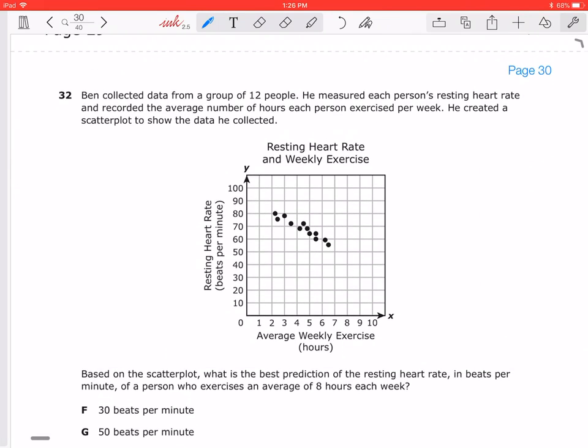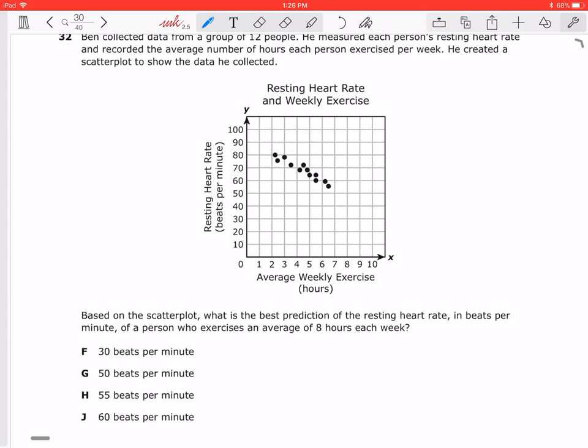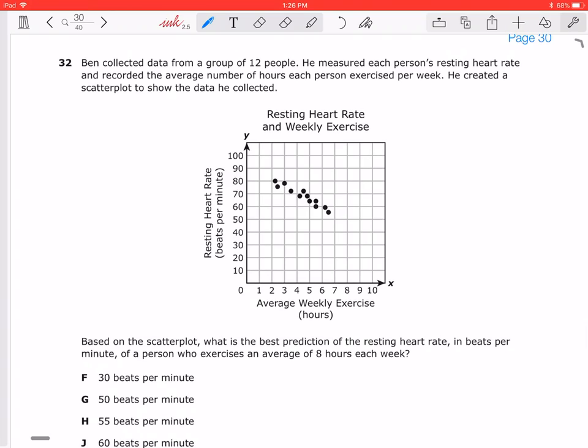Let's see. 32. So Ben is collecting data from a group of 12 people. He measured each person's resting heart rate and recorded the average number of hours each person exercised each week. Created a scatter plot. So a scatter plot is just a number of data that we can talk about that depending on how closely related that data is, we can make extrapolations and predictions where our values meet.